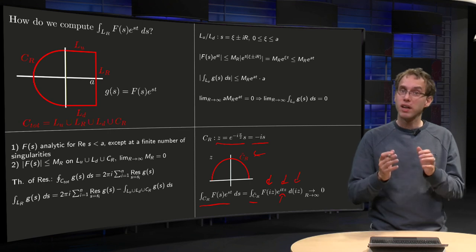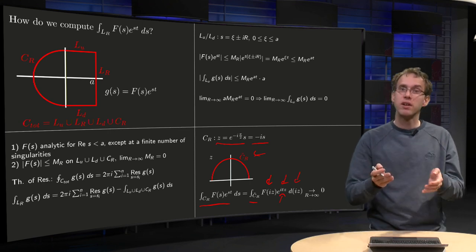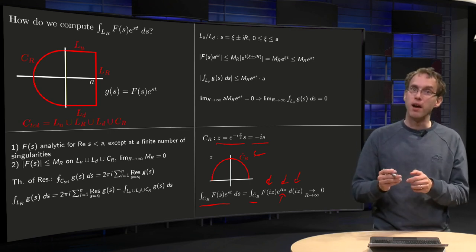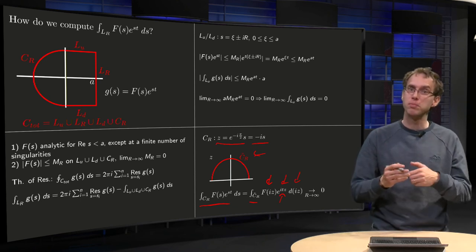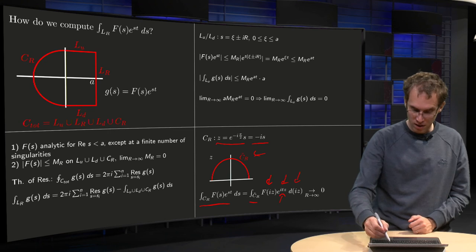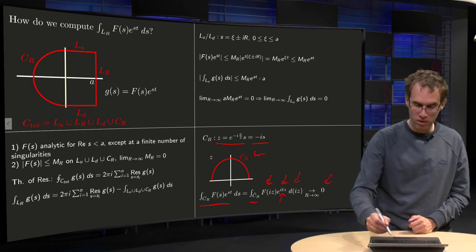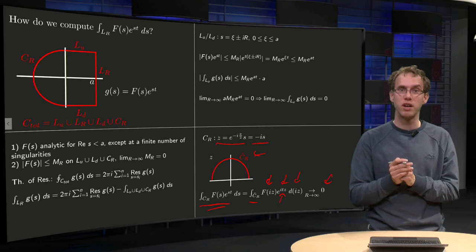So what happens? We can apply the lemma of Jordan. The F is bounded by some M_R going to 0, which means that if R goes to infinity, this latter integral goes to 0, which means that the original integral along C_R goes to 0.